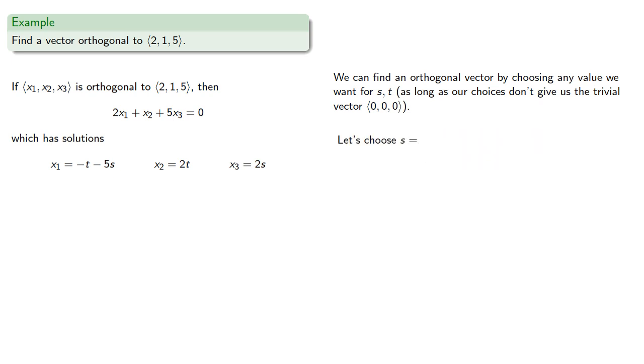We can find an orthogonal vector by choosing any value we want for s and t, as long as our choices don't give us the trivial vector (0, 0, 0). So let's choose s equal to 1. We also need a value for t. Since s isn't 0, we don't have to worry about producing the 0 vector, so we'll let t equal 0 and get the specific vector (5, 0, -2).